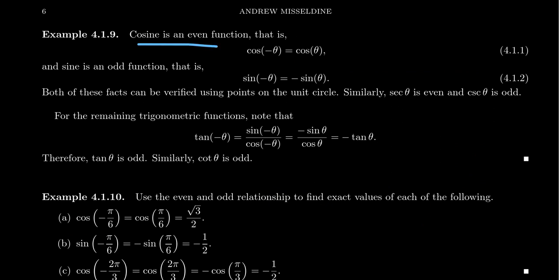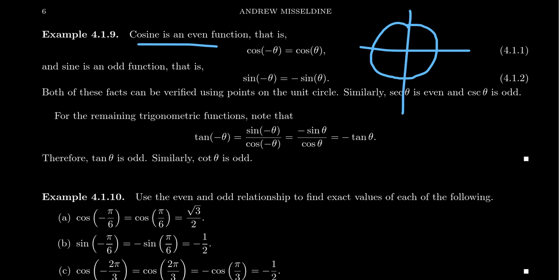Cosine is even, so the graph of cosine is symmetric with respect to the y-axis. As a formula, cosine of negative theta is equal to cosine of theta. If you think of the unit circle: rotating your angle counterclockwise vs. clockwise (negative theta), the x-coordinate doesn't care about the direction. Whether you rotate clockwise or counterclockwise, the x-coordinate stays the same. So cosine of negative theta equals cosine of theta — cosine is an even function.